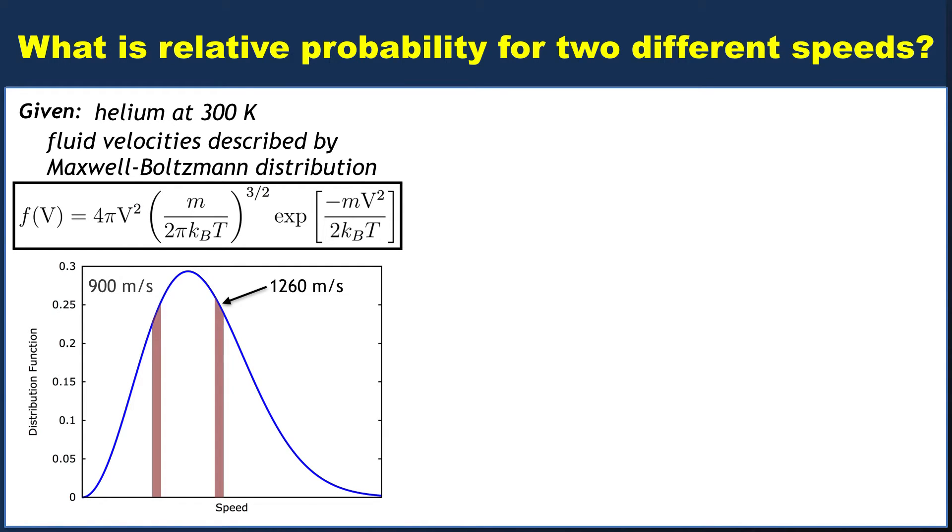For this lower speed, we'll just pick 900 meters per second. So we want to know the relative chances of finding particles at 1260 compared to 900 meters per second.